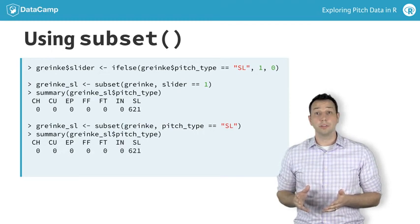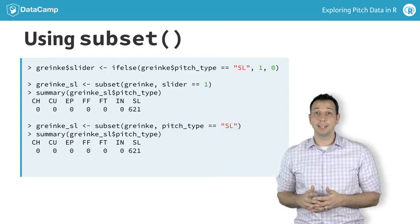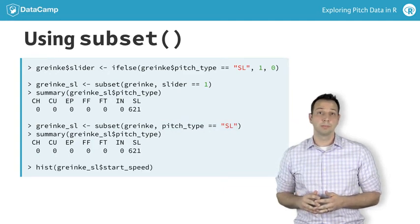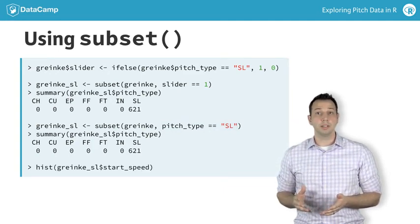Granted, the original ifelse was not necessary, as we could have also subset by the pitch_type variable in the first place, and ended up with the same result. This makes subset pretty convenient when we want to work with portions of our data.